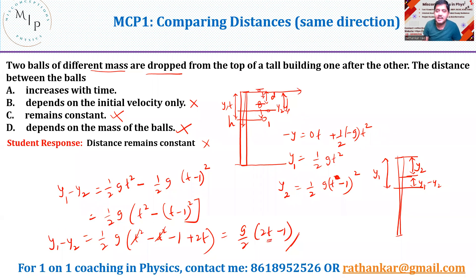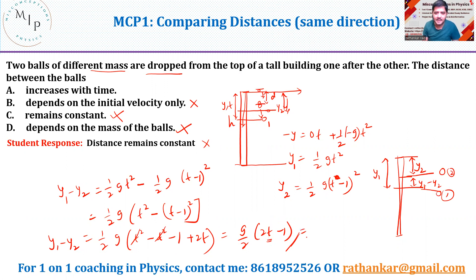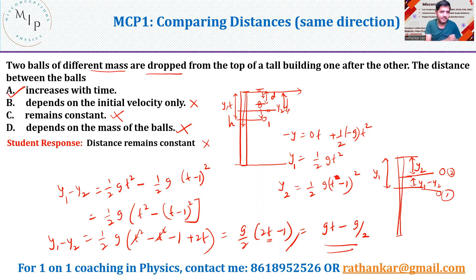So y1 minus y2 equals g over 2 times (2t minus 1), which is directly proportional to time. This means when the time increases, the distance between the two balls also increases. For example, at t equals 5 seconds, the distance is g over 2 times 9. At t equals 6 seconds, it becomes g over 2 times 11 — larger. So the right answer is option A: the distance increases with time.